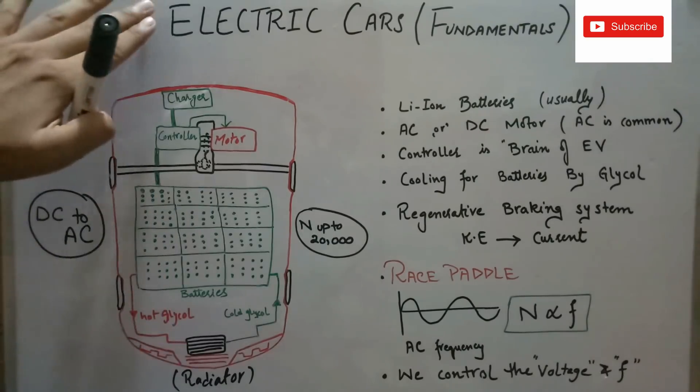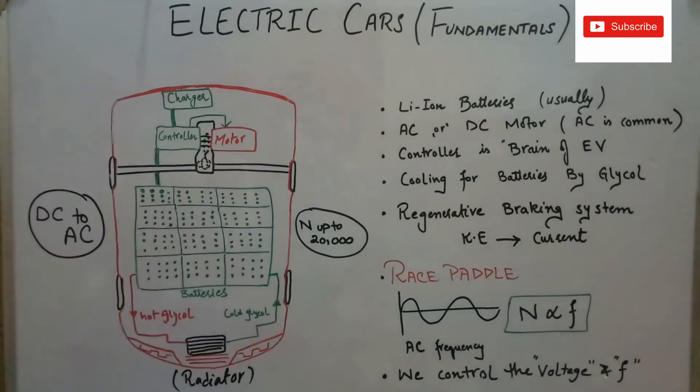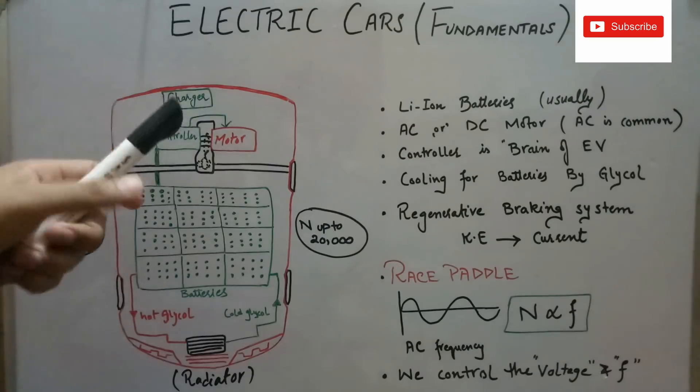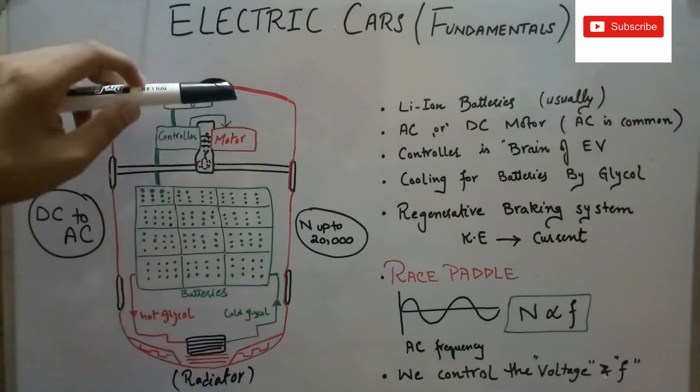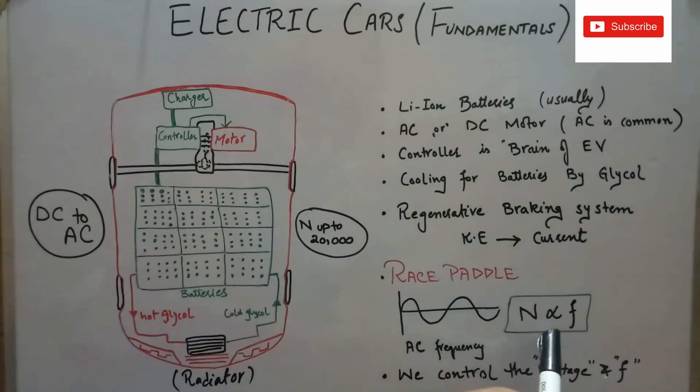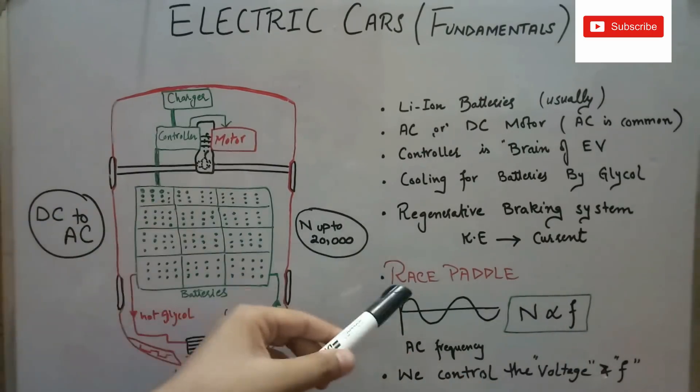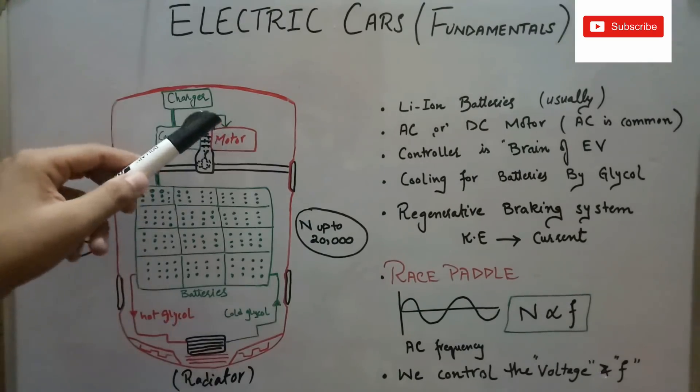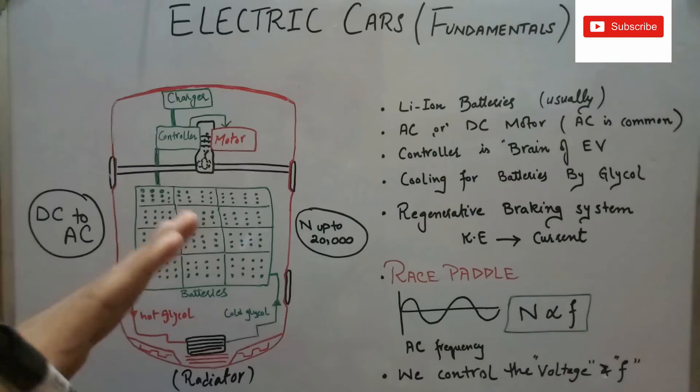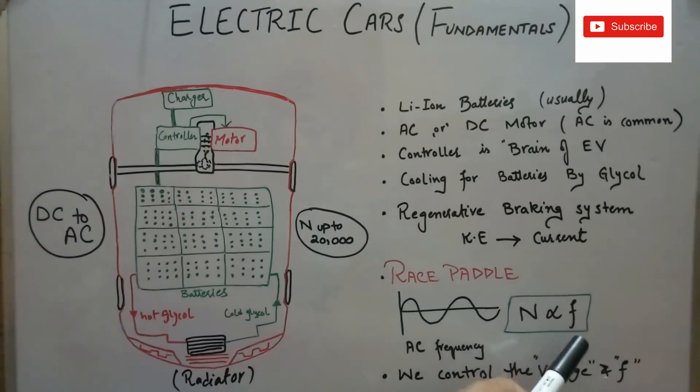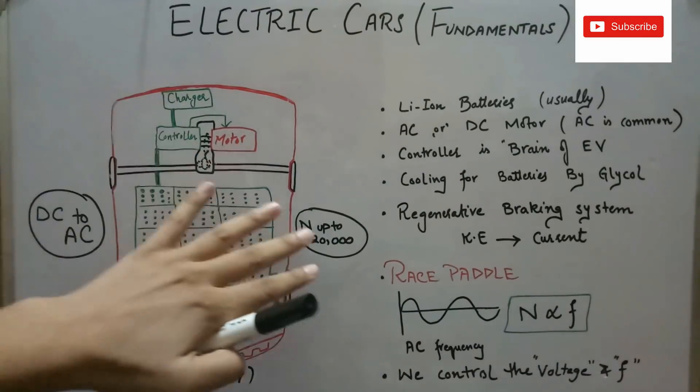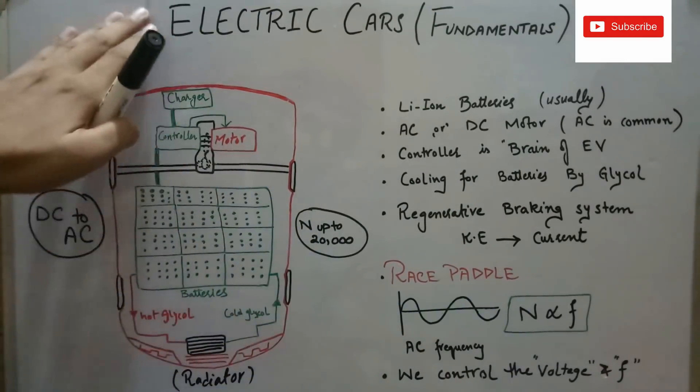So now the question arises: how do electric cars accelerate or decelerate? How do we control the RPMs or power for the electric vehicle? Actually, the RPMs produced in the induction motor are directly proportional to the frequency and voltage of the AC current produced by the controller and provided to the motor. By the race pedal, we actually control the frequency and voltage for this AC current, and we control the power and RPMs in that way in electrical vehicles.